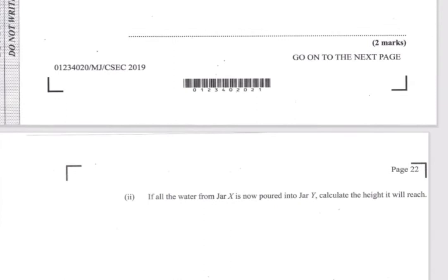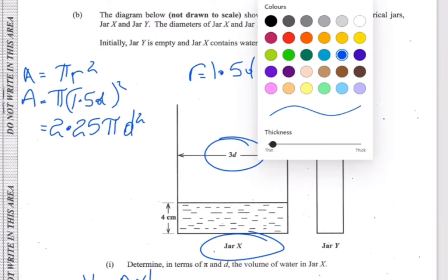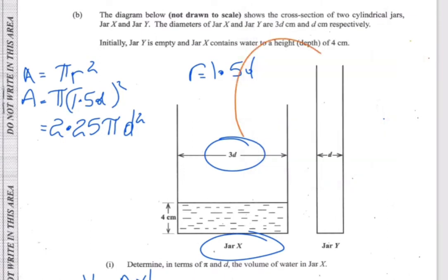The next part says: if all the water from jar X is poured into jar Y, calculate the height it will reach. So we're taking the water out of jar X and pouring it into jar Y — maybe like pouring from one cup to another when cooling tea, or moving liquid from a larger container to a smaller one.